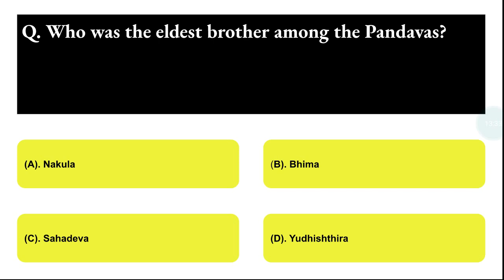Next question: who was the eldest brother among the Pandavas? Option A: Arjuna, Option B: Bhima, Option C: Sahadeva, Option D: Yudhishthira. The correct answer is option D, that is Yudhishthira.